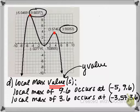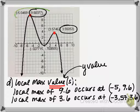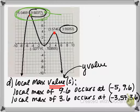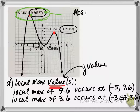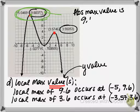Now the absolute max value — that is the largest y value over the graph's entire domain. In this case, my absolute maximum point is going to be the highest point on the graph. Therefore, my absolute max value is the y value of that coordinate, which is 9.6. That's the absolute max value.